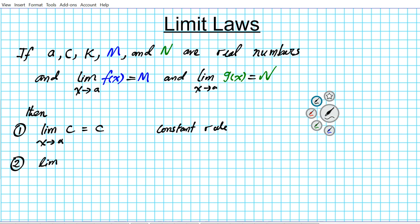Number two: the limit as x approaches a of x to the n is equal to a to the n power. So if you have a monomial function of x, the limit as x approaches a means you simply substitute the value a into x and get a to the n power. This is known as power rule number one.